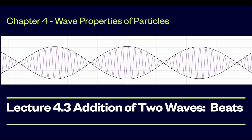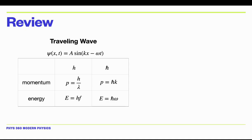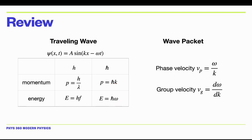Lecture 4.3: Addition of Two Waves and the Phenomenon of Beats. As a review, remember that if we have a de Broglie wave that is a harmonic wave with wave number k and angular velocity omega, we can find the momentum and energy of the particle. The momentum is h-bar times k and the energy is h-bar times omega. The general expression for phase velocity is omega over k, and the group velocity is d-omega/dk.